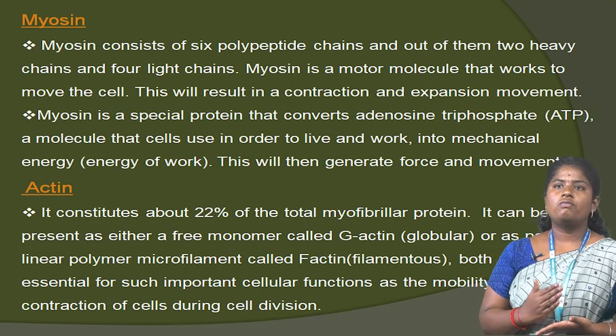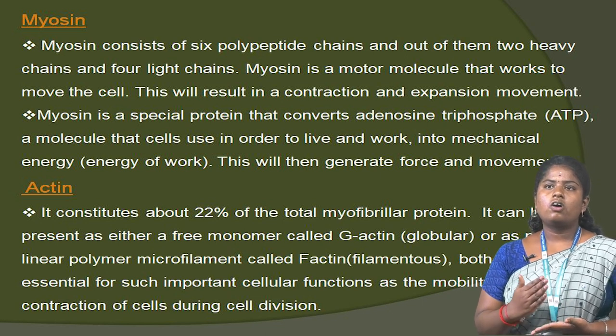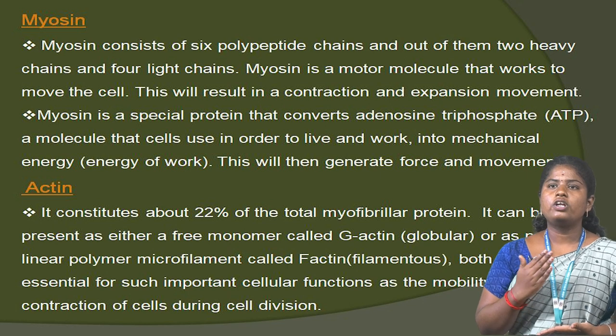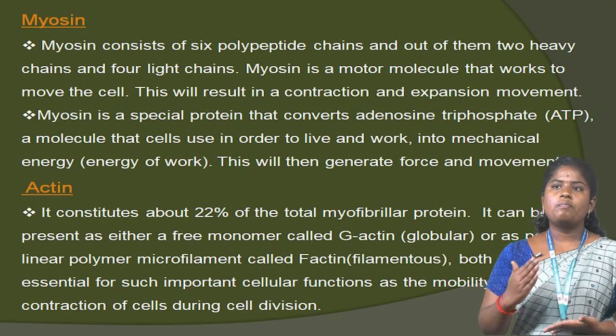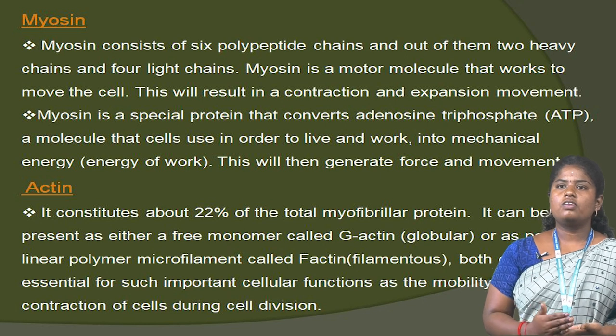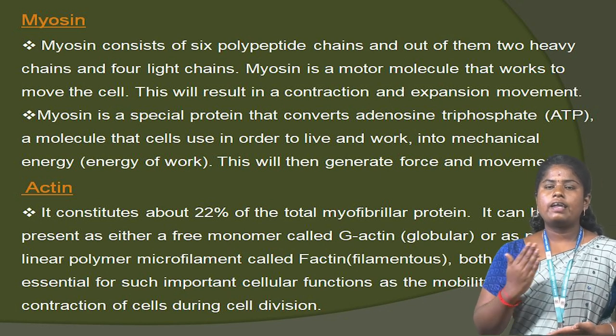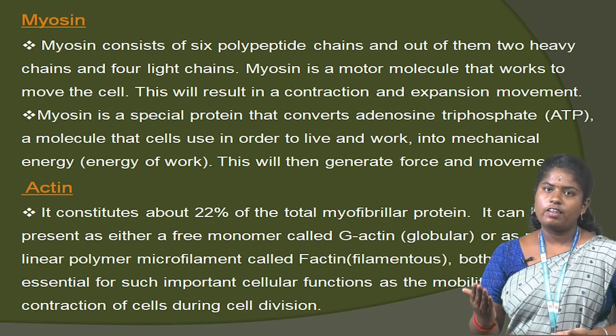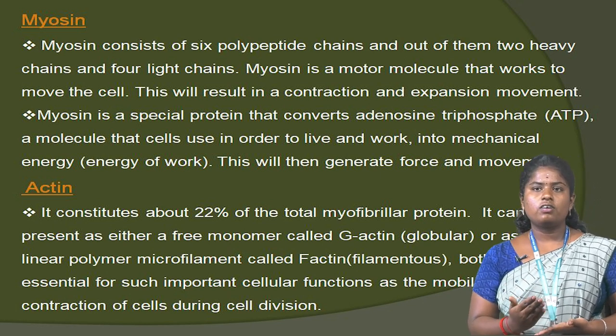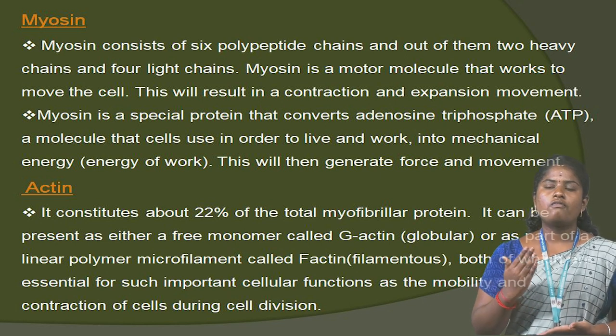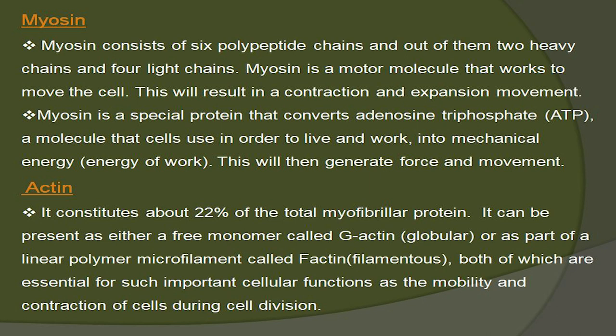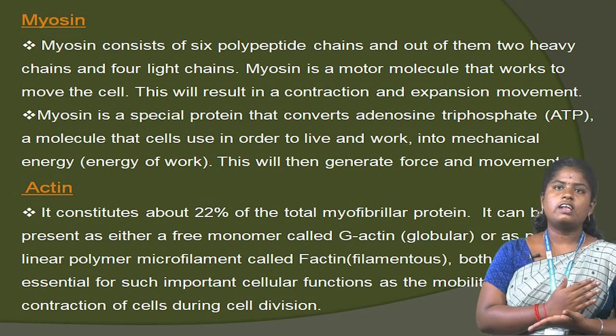Myosin is a motor molecule that works to move the cell, resulting in contraction and expansion movement. Myosin is a special protein that converts adenosine triphosphate (ATP) — the molecule that cells use in order to live and work — into mechanical energy, generating forces and movement. Actin constitutes about 22% of the total myofibrillar protein. It can be present either as a free monomer called G-actin, or as part of a linear polymer microfilament called F-actin. Both are essential for important cellular functions such as mobility and contraction of the cell during cell division.